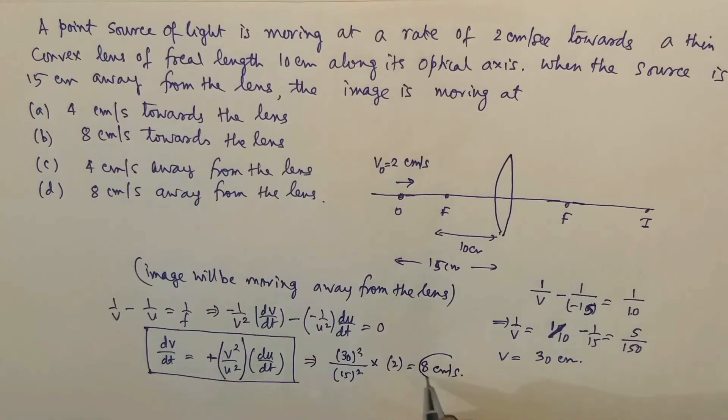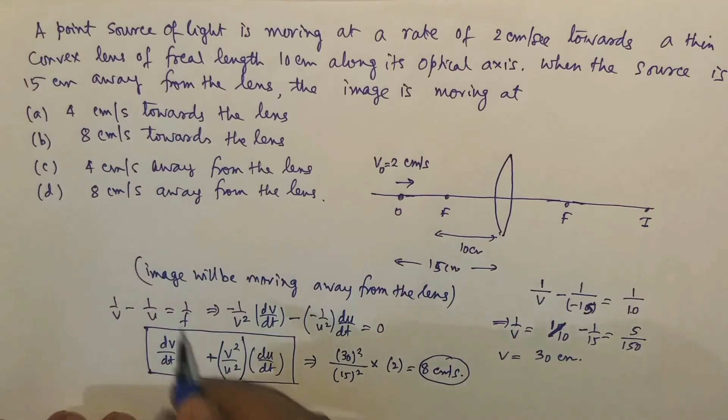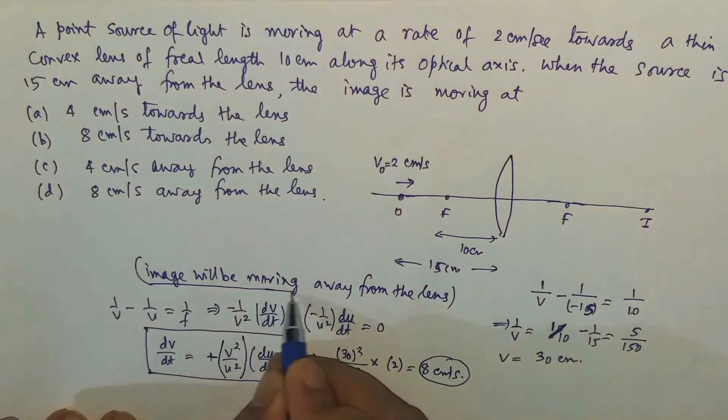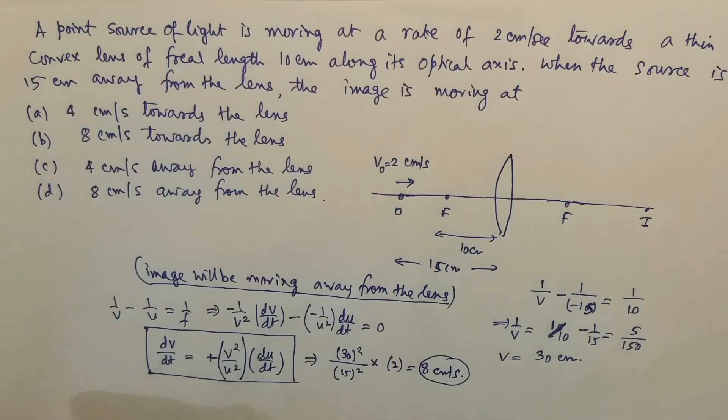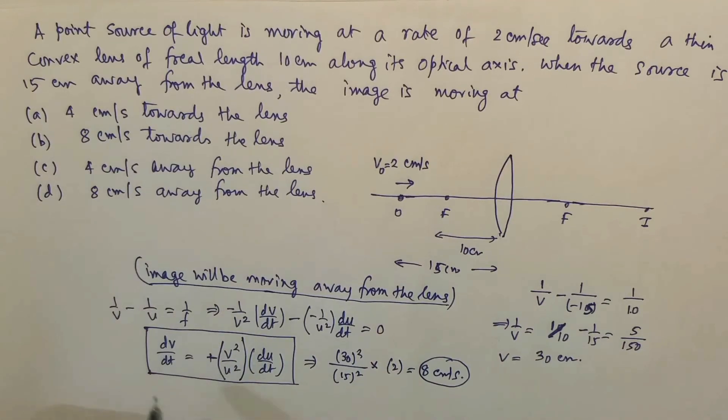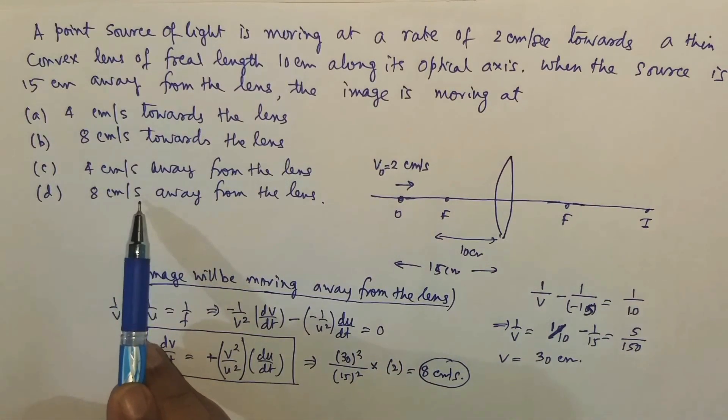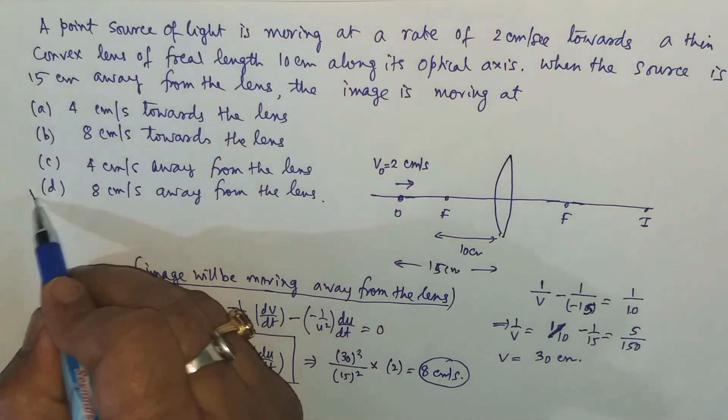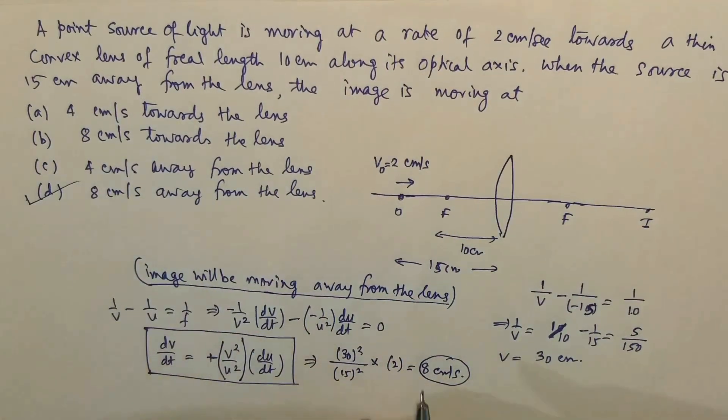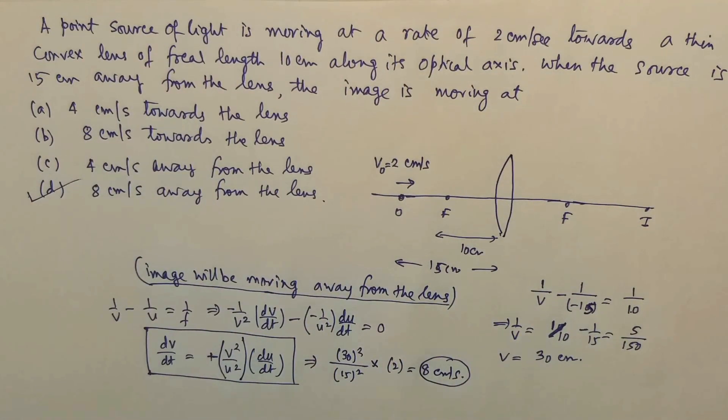And we have already decided that the image will be moving away from the lens. So 8 centimeters per second and moving away from the lens will be the correct option for this particular question.